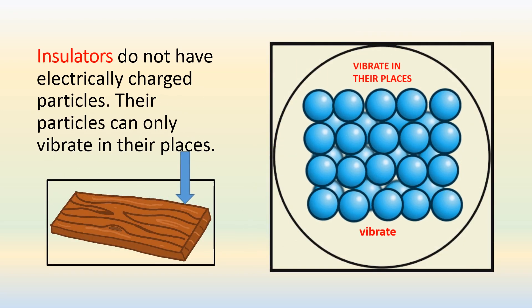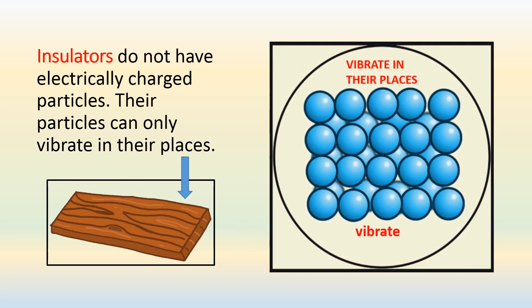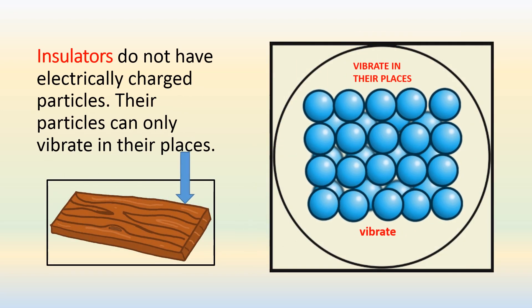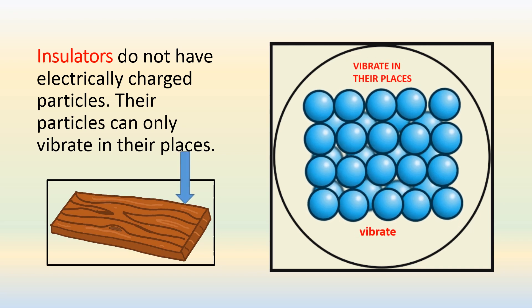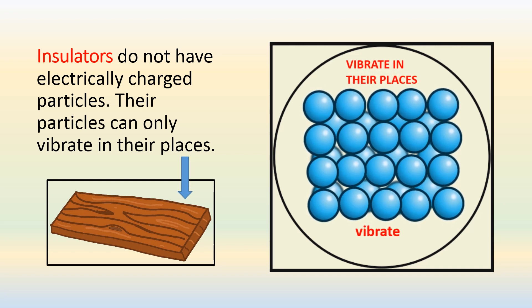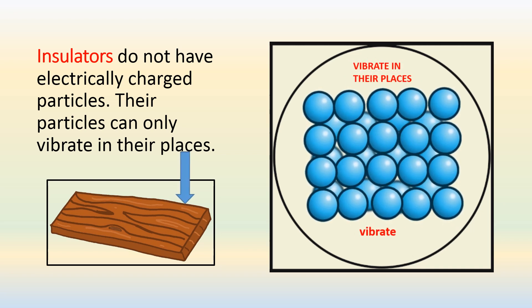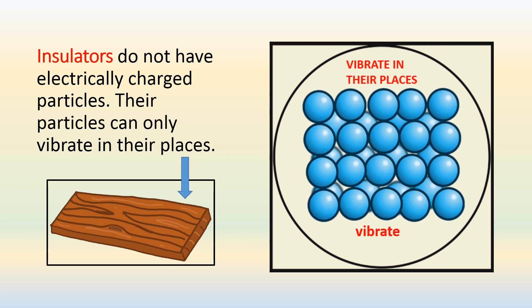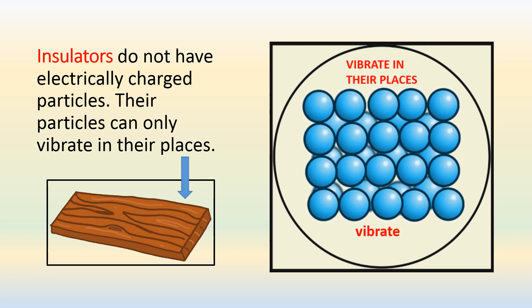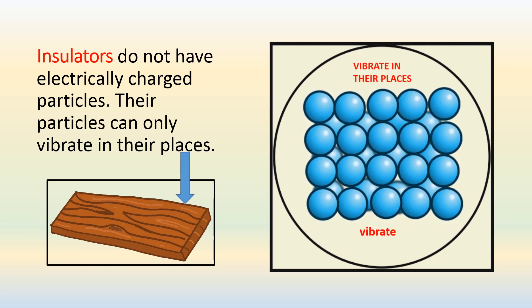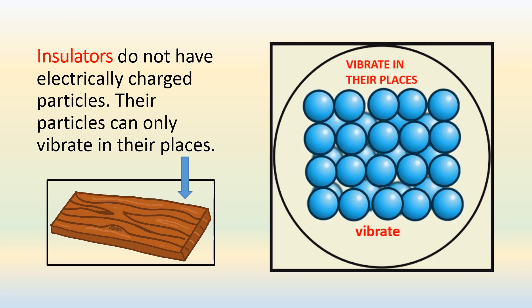But how do we know if materials are insulators? Insulators do not have electrically charged particles. Their particles can only vibrate in their places. The best example is wood.